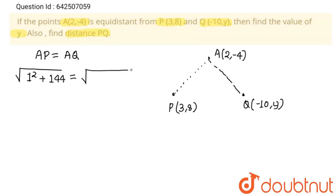Now for distance AQ, using the distance formula: square root of (x2 - x1)² + (y2 - y1)². Taking A as (x1, y1) and Q as (x2, y2): (2 - (-10))² = 12² = 144, plus (-4 - y)².